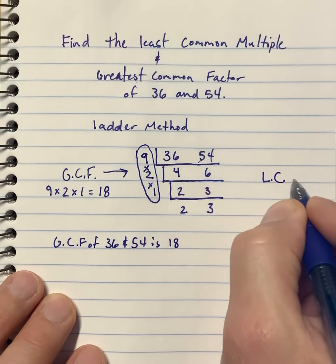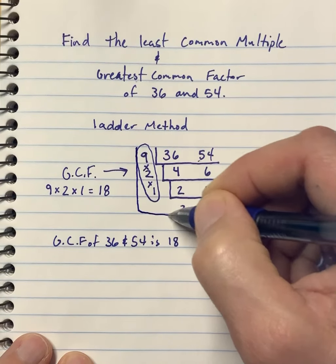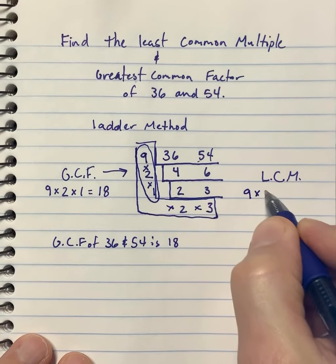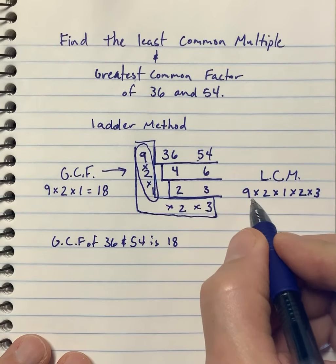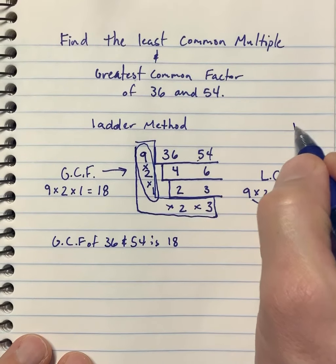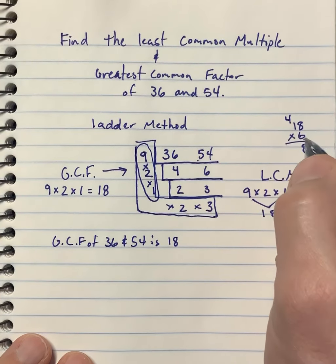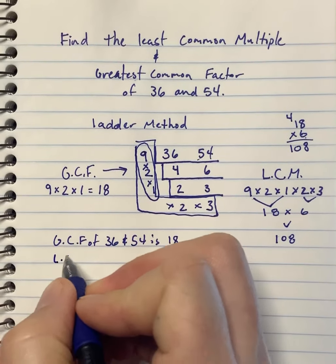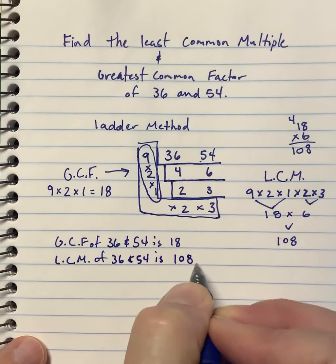The least common multiple is going to be all of these numbers. I like to tell my students that the least common multiple starts with an L, so it's all the numbers that form this L-shape on the outside: 9 times 2 times 1 times 2 times 3. All those together equal 18, and then 2 times 3 is 6. So 18 times 6 gives the least common multiple. 6 times 8 is 48, 6 times 1 plus carry the 4 is 10 — so the least common multiple of 36 and 54 is 108. There you have it: the ladder method.